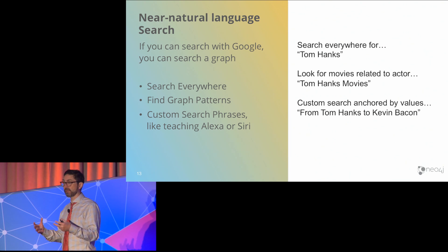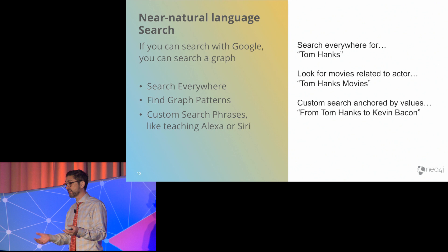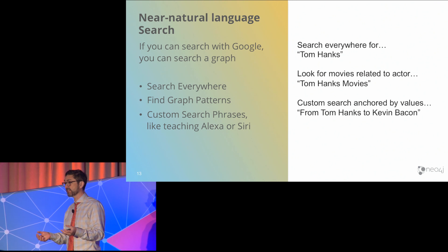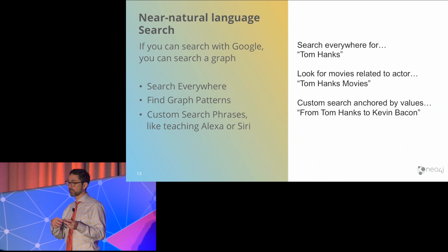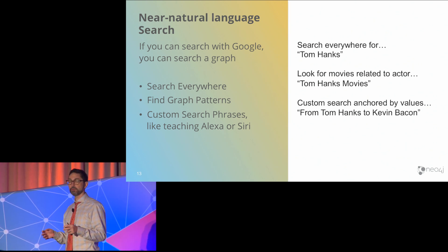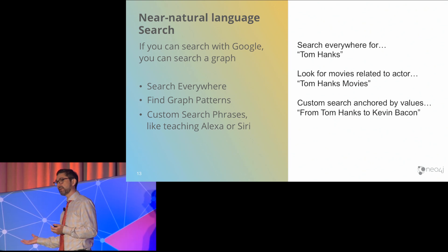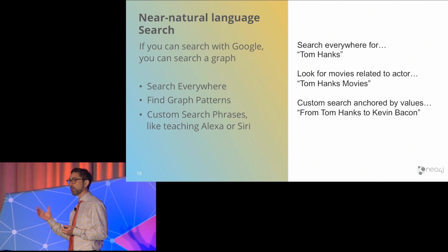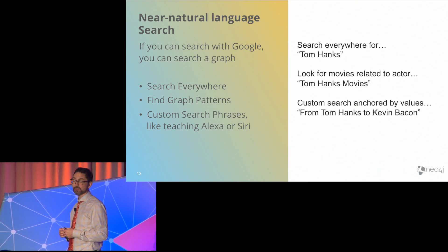If you've got data that makes sense because of how you've labeled it, how the property keys are named, and what the data itself actually is, we use that as a dictionary for producing a natural language that we can parse. So somebody not comfortable with Cypher can just type in something that looks like what they might type into Google Search. If you're comfortable doing a Google search, rather than Google being the knowledge graph of the web, we want to be the knowledge graph for all graphs using Neo4j.